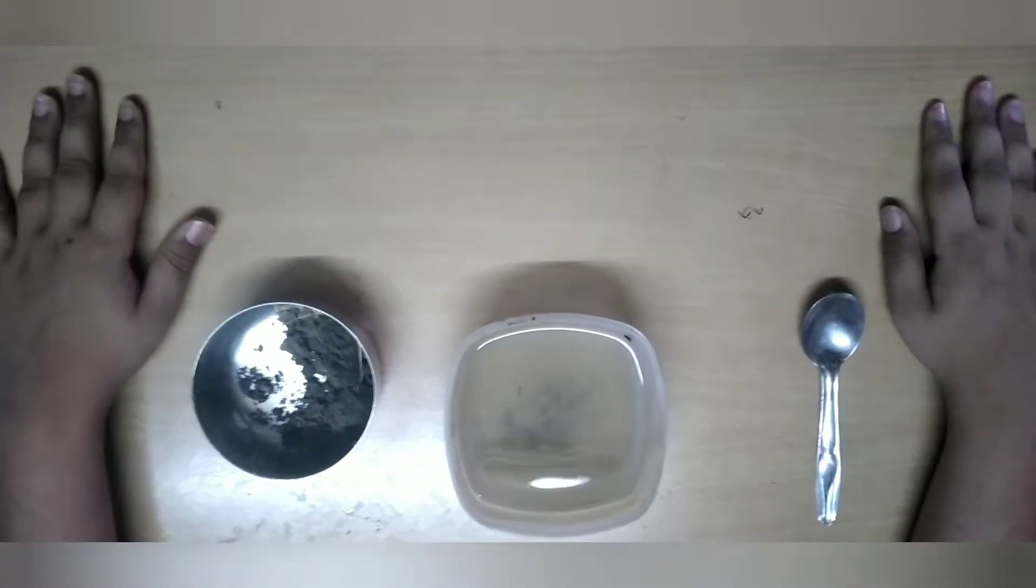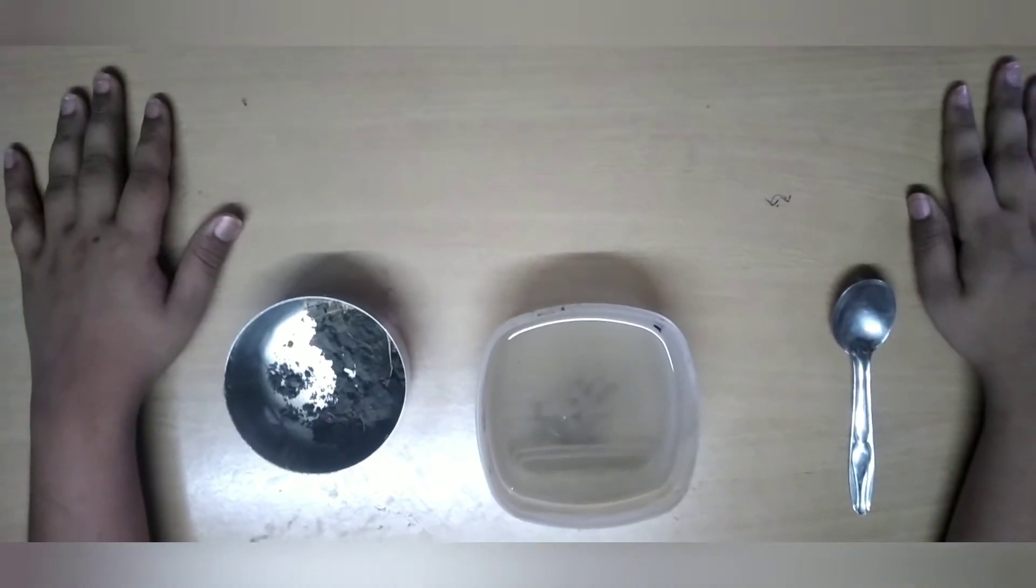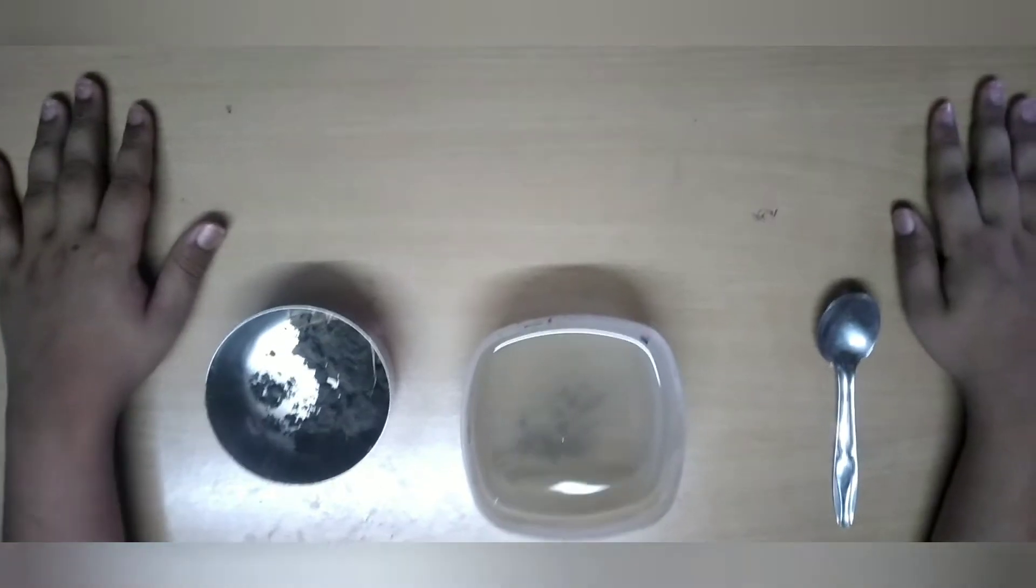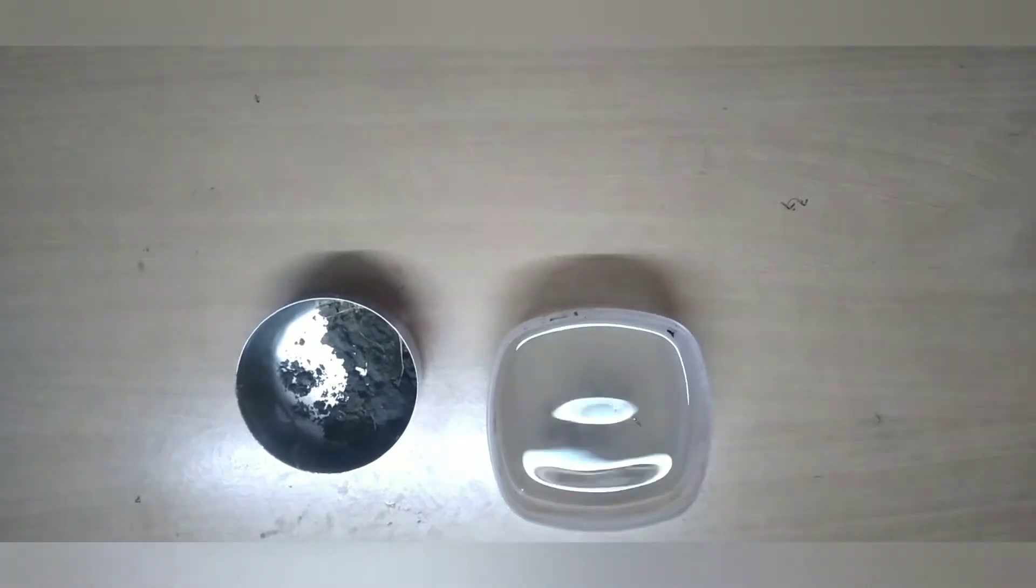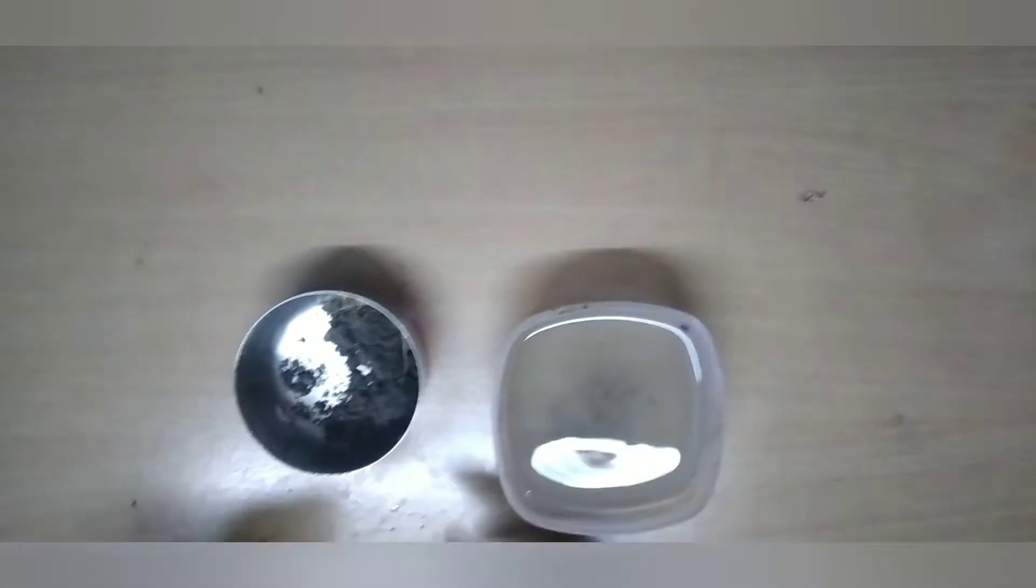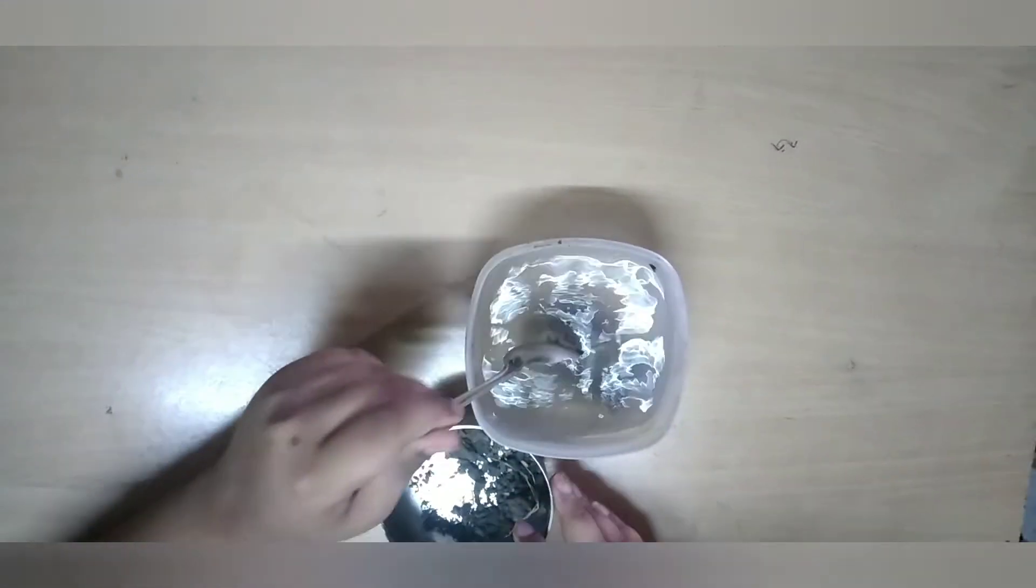The next process is sedimentation and decantation. For this, we need muddy water, some mud and a spoon. You can also take fresh water, but to not waste water, we have taken muddy water. Now we will put some more mud on the water and stir it.